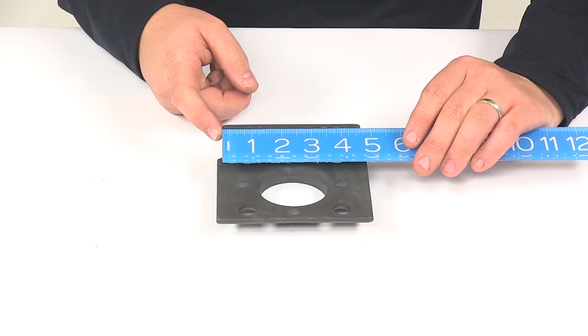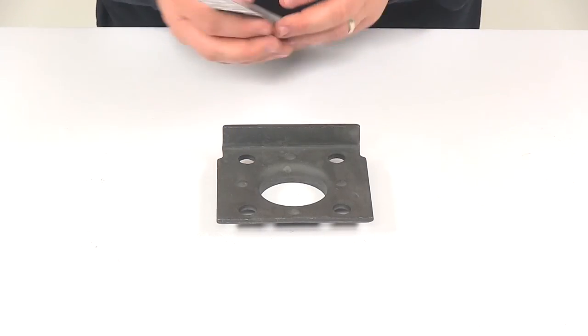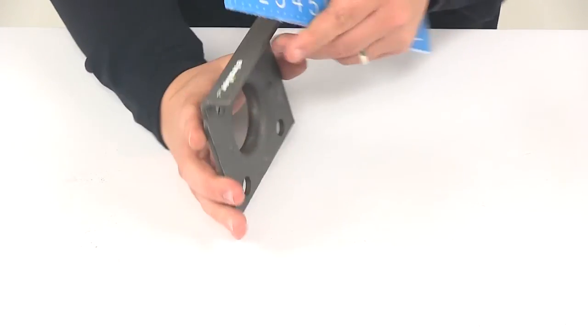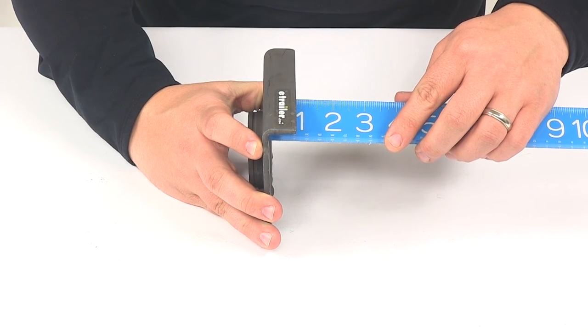But just that weld-on piece, that's going to give us a measurement of four and five-eighths of an inch long, and if we take a measurement of the depth of that lip area, that's going to give us a measurement of about three quarters of an inch deep.